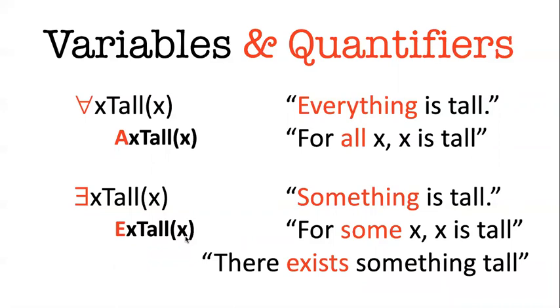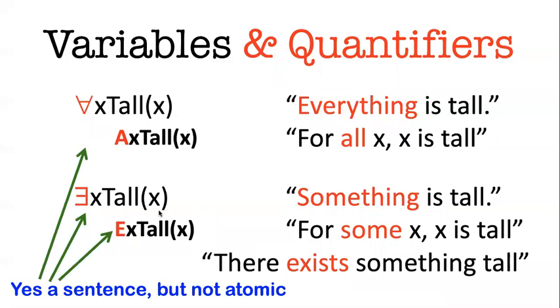Now, let me point out something really important. These things are not atomic sentences. Remember the recipe for atomic sentences - you have to take the right number of names and put that in the argument places of predicates. There are no names in these things. So these are complex sentences. Quantifiers are like connectives. They are ways of making more and more complex sentences. So don't confuse these things with atomic sentences. These are sentences of FOL, but they're not atomic ones, they're complex ones.